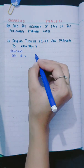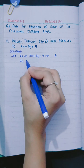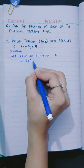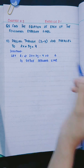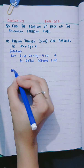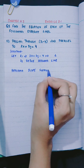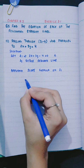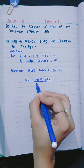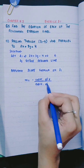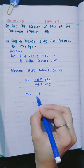Let l1 be equal to 2x + 3y - 4 = 0, and let l2 be the required line. Applying the slope formula on l1: m equals minus the coefficient of x divided by the coefficient of y, so m1 equals minus 2 divided by 3.